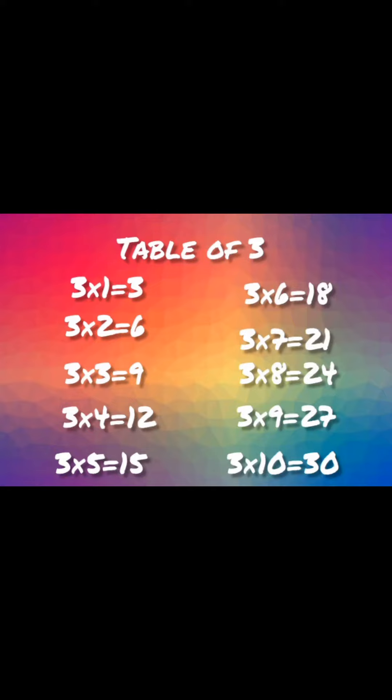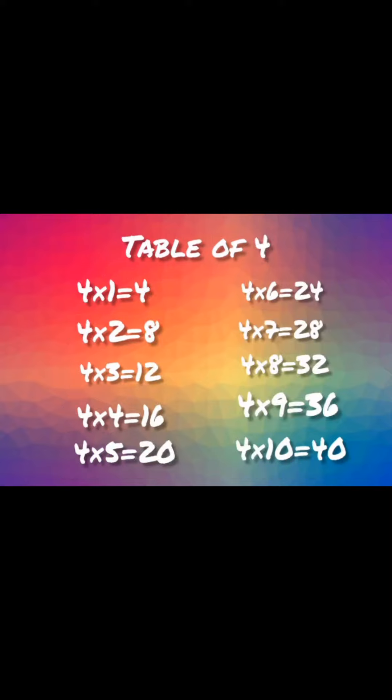Three sixes are eighteen. Three sevens are twenty-one. Three eights are twenty-four. Three nines are twenty-seven. Three tens are thirty. Table of four.